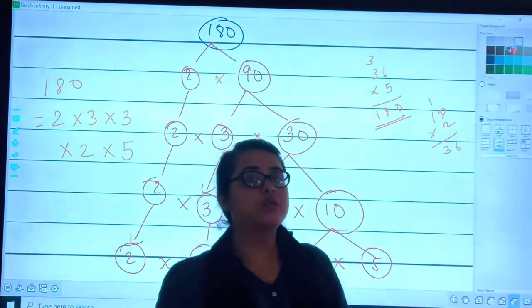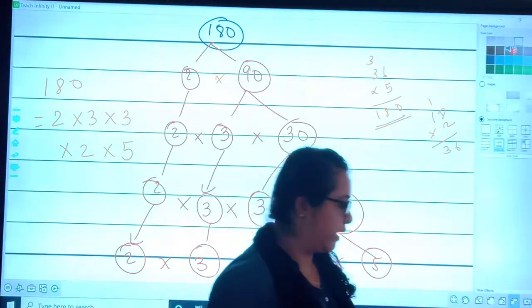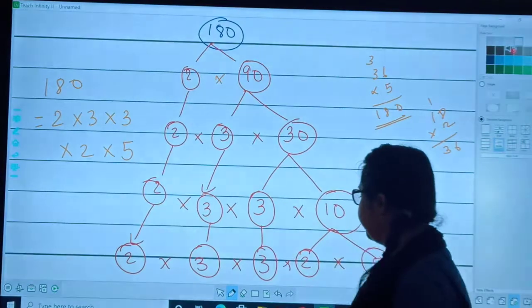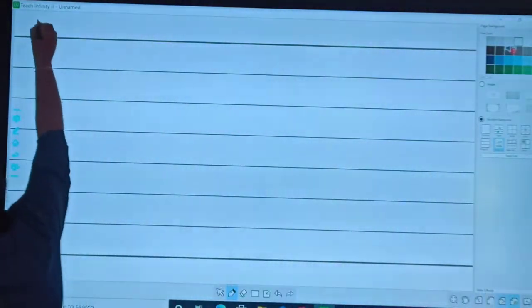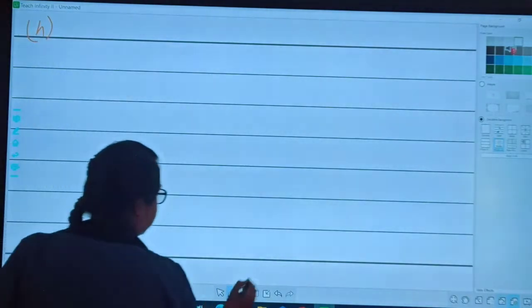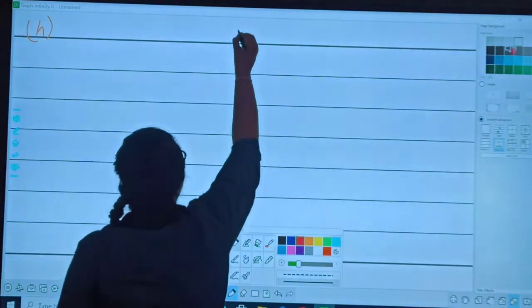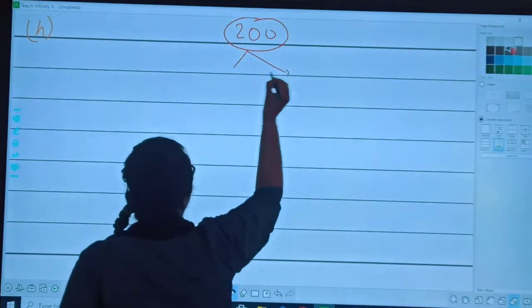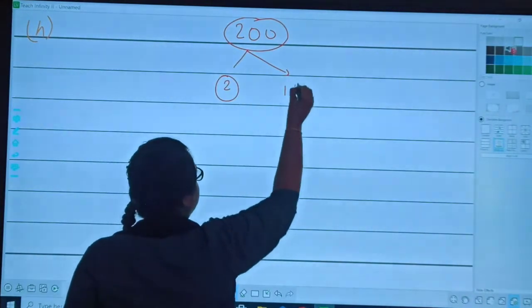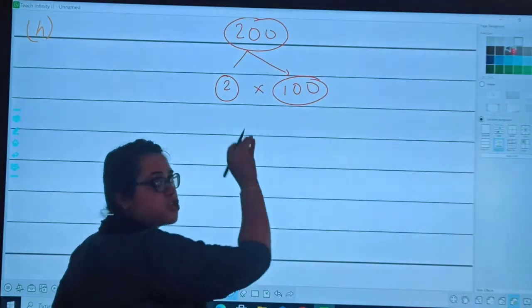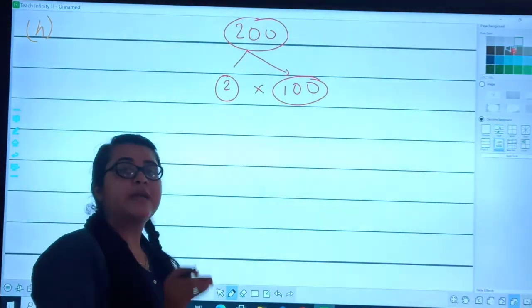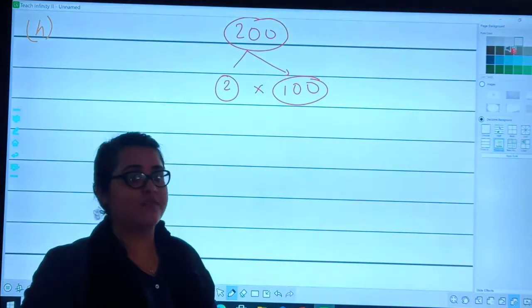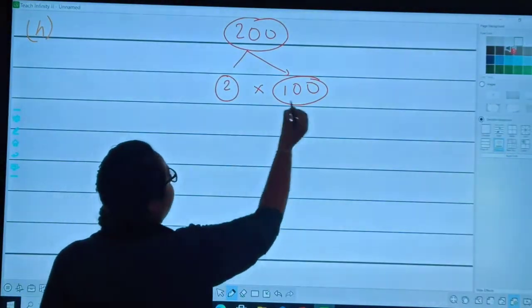Okay students, do you want should I solve one more sum of factor tree? Let's solve now 200, H. Now we will be solving H. Our question is 200. Now I will start to split this 200. I will be trying 2, 100.